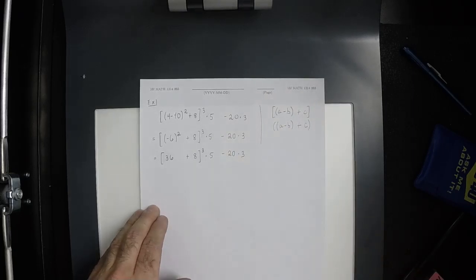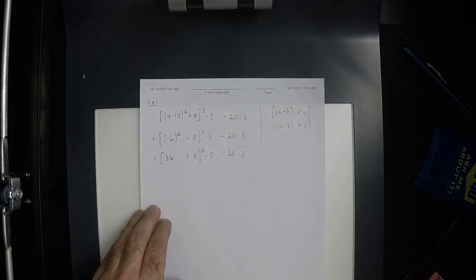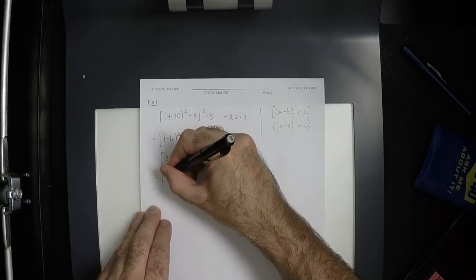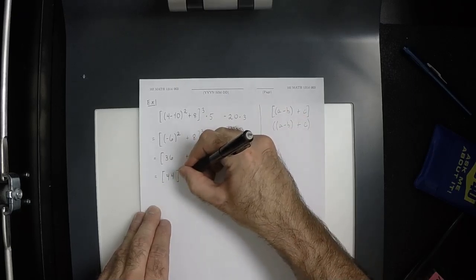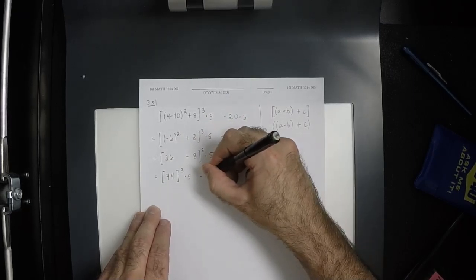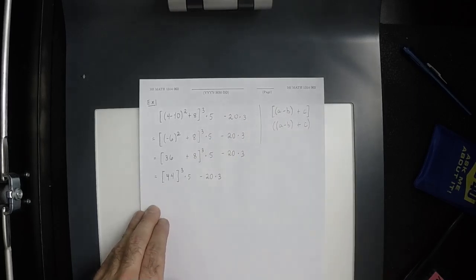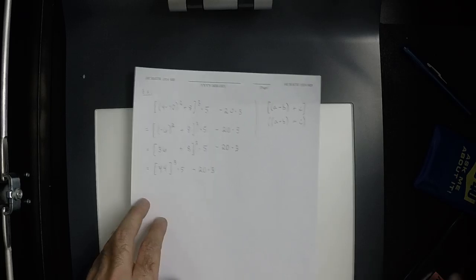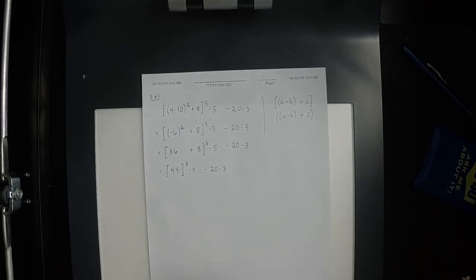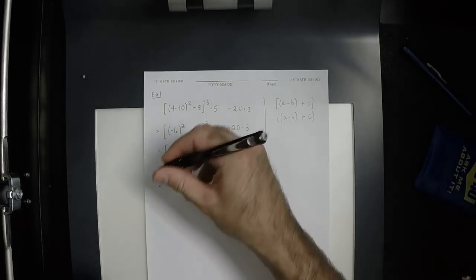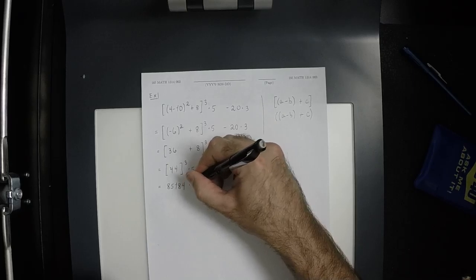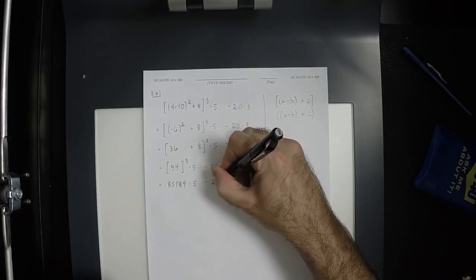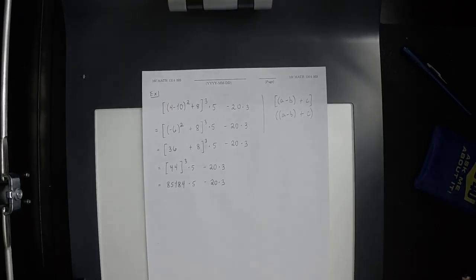Now what? 36 plus 8, which is 44. Now what? 44 cubed, which is 85,184 times 5 minus 20 times 3.